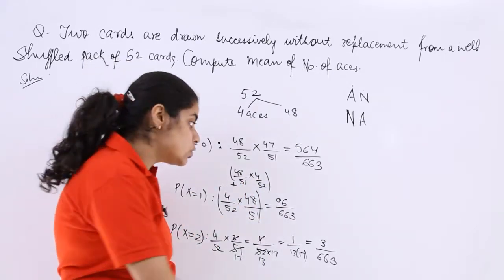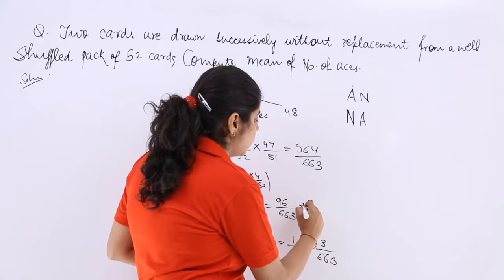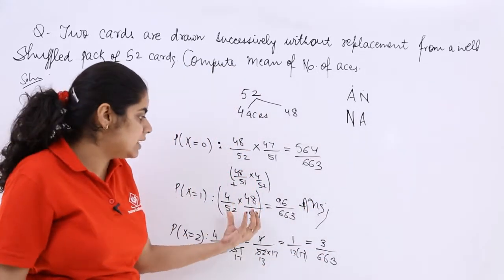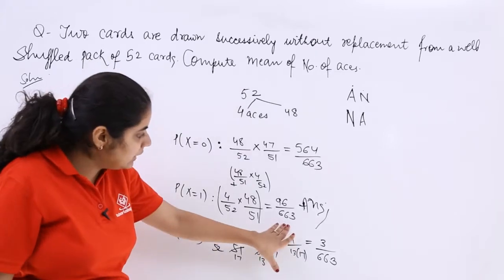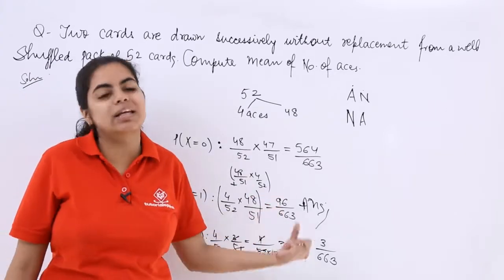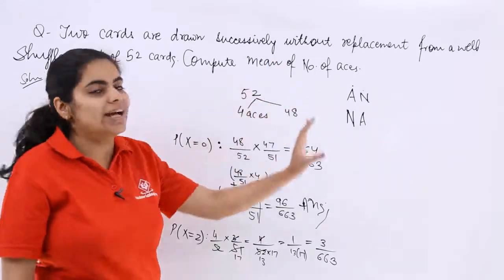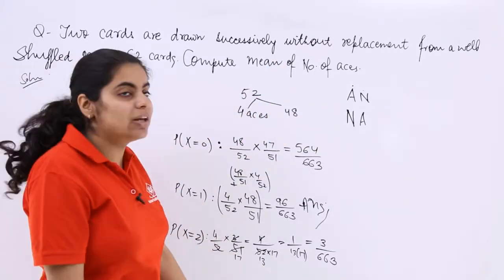So there are 2 things. So this 96 will come after calculating both because otherwise this is just half of it. So 96 over 663 will come after calculating both. Now what has to be calculated? The mean has to be calculated.